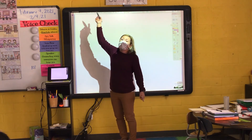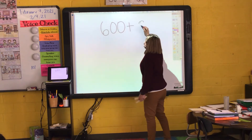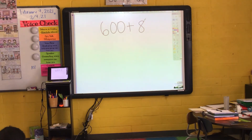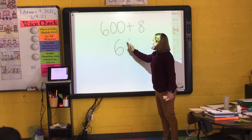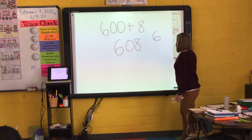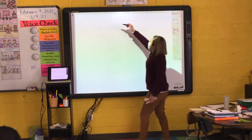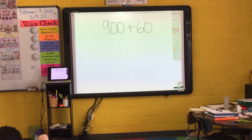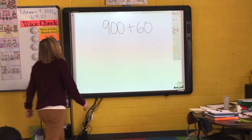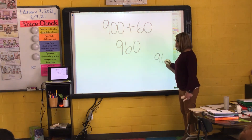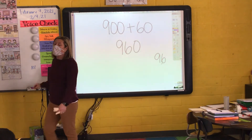Let's take a look at another one. I'm writing it in expanded form; you're writing the number that it is. 600 plus 8. Write what number that is. Melina, what number is that? 608. Do I have to put that 0 in the middle? Yes, because that shows me I have 0 tens. If I don't put the 0 in the middle, that is the number 68, and I cannot do that. One more: 900 plus 60. Aiden, what's the number? 960. Do I have to put the 0 at the end? Yes, because if I don't, my number is simply 96. So you have to put that 0 at the end.